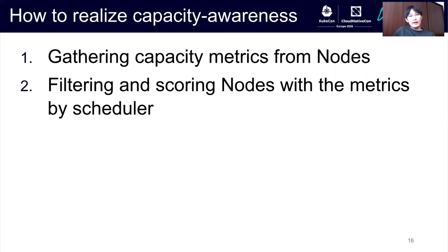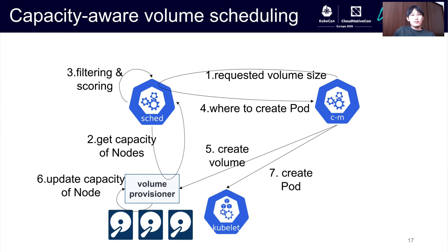So capacity-awareness is key to dynamic provisioning. To achieve capacity-aware volume scheduling, we need to follow two steps. The first consists of gathering capacity metrics from nodes. Then the scheduler filters and scores the nodes using capacity metrics and the required volume size. First, the volume provisioner gathers capacity metrics. When the pod controller requests pod scheduling, the controller should pass the requested volume size to the scheduler. To determine where to locate the pod, the scheduler filters and scores all nodes based on the capacity metrics and the requested volume size. After that, the persistent volume controller will request a volume from the provisioner.